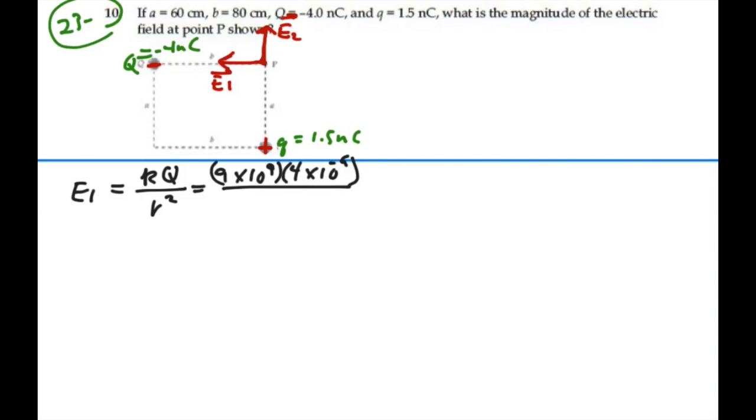We are distance little b away, which is 0.8 meters away squared. So we calculate this, realizing that the 10 to the 9 and 10 to the minus 9 cancel out. This is actually 36 divided by 0.8 squared, and that is 56.25, so we'll say 56.3 newtons per coulombs.